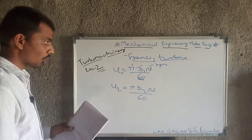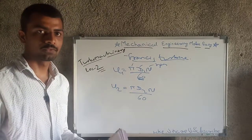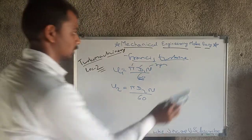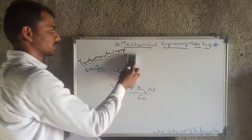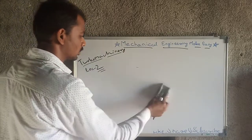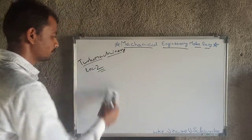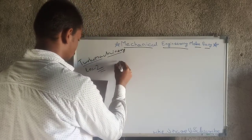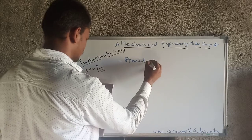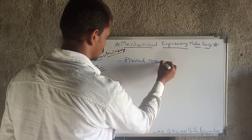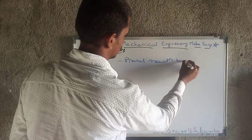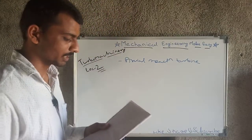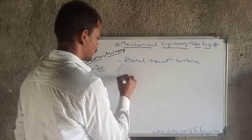This is all about Francis Turbine. If you have any confusion you can comment — I don't think there is any concept remaining for the GATE point of view, but I'll solve your problem if you comment. Now I will move towards Axial Reaction Turbine. Axial reaction turbines include the Kaplan Turbine and Propeller Turbine.